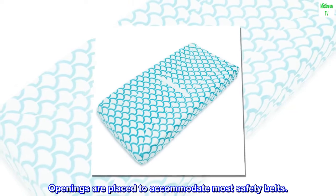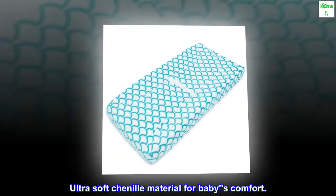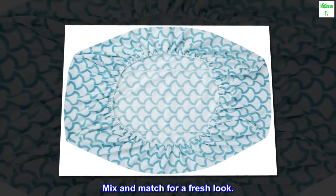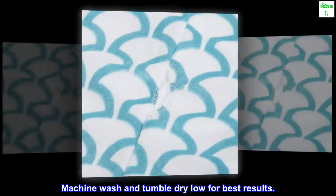Openings are placed to accommodate most safety belts. Ultra soft chenille material for baby's comfort. Mix and match for a fresh look. Machine wash and tumble dry low for best results.